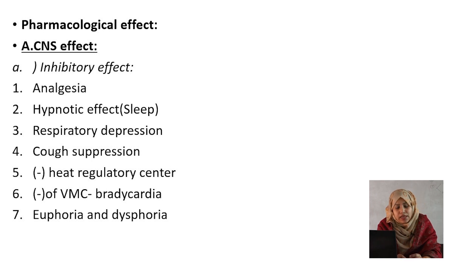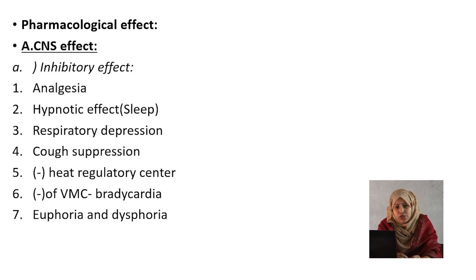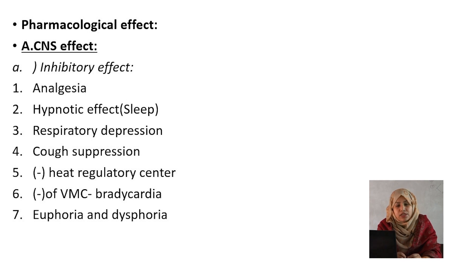Morphine is used primarily for analgesia, and this is the most important reason for its use. Number 2 is the hypnotic effect, that means sleep. In case of morphine, there is deep sleep — so deep that a person cannot be aroused by an ordinary stimulus.